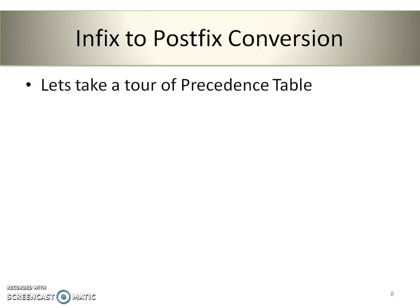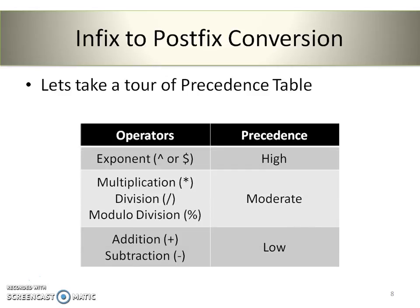Now let's see the precedence table, where the operators are given with their precedences. The exponent operator can be represented with either the cap symbol or the dollar symbol, and it has high precedence. Multiplication, division, and modulo division are at moderate precedence. Addition and subtraction have low precedence.